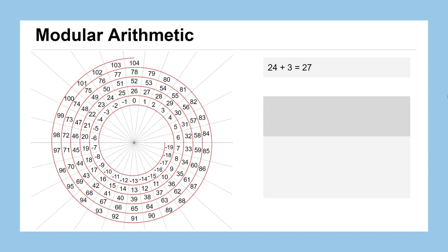So if I were to ask you what 24 plus 3 is, we could find 24, move 3 spots to the right on the spiral, and see we land on 27.